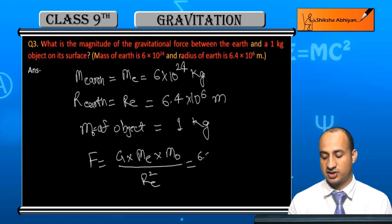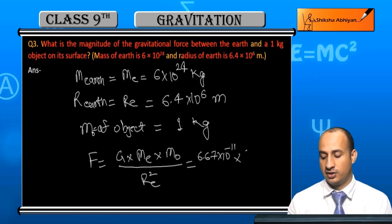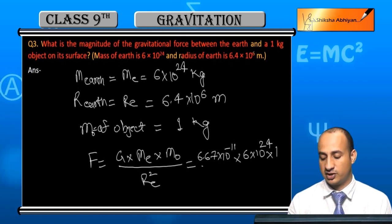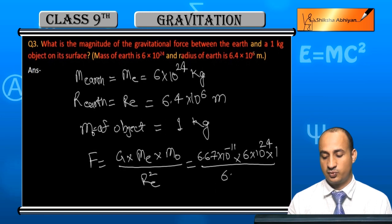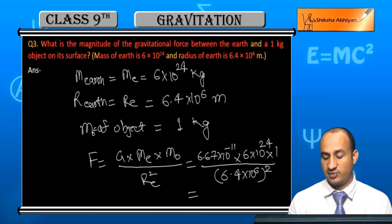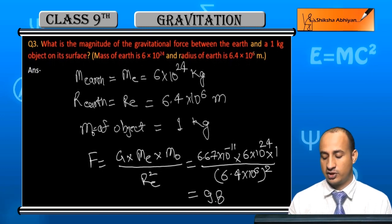G is 6.7×10^-11, the gravitational constant. M_earth is 6×10^24, m_object is 1 kg, divided by radius squared, 6.4×10^6 squared. When you solve it, the result is approximately 9.8 Newtons.